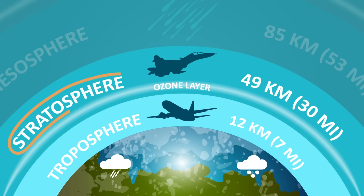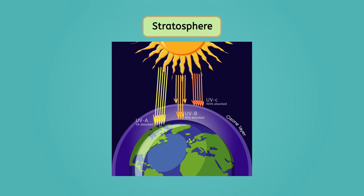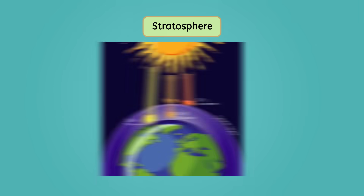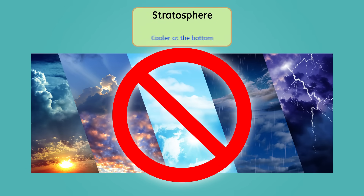The next layer is the stratosphere. It starts from the top of the troposphere and goes 50 kilometers high. The stratosphere is home to the ozone layer — characterized by a high concentration of molecules that absorb the most harmful ultraviolet radiation from the sun. That energy is then turned into heat. Because heat rises and there is no weather or wind to circulate the molecules like in the troposphere, we'll find cooler temperatures at the bottom of the stratosphere and warmer temperatures near the top.